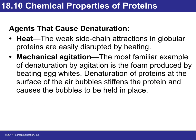Some examples of agents that can cause denaturation: heat. Think about cooking an egg and looking at the egg white — the egg white will solidify, and you can't go back. Mechanical agitation is the same thing; when you beat up egg whites it makes foam, and there's no way to go back to the original form.